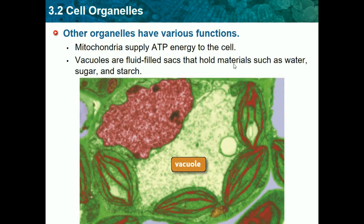A vacuole is a fluid-filled sac that holds materials such as water, sugar, and starch — which are carbohydrates we learned about previously. Vacuoles are basically like a big pool of water in a cell. In plant cells they are very large, but in animal cells they are very small. Plant cells need large vacuoles to hold water and maintain their shape.